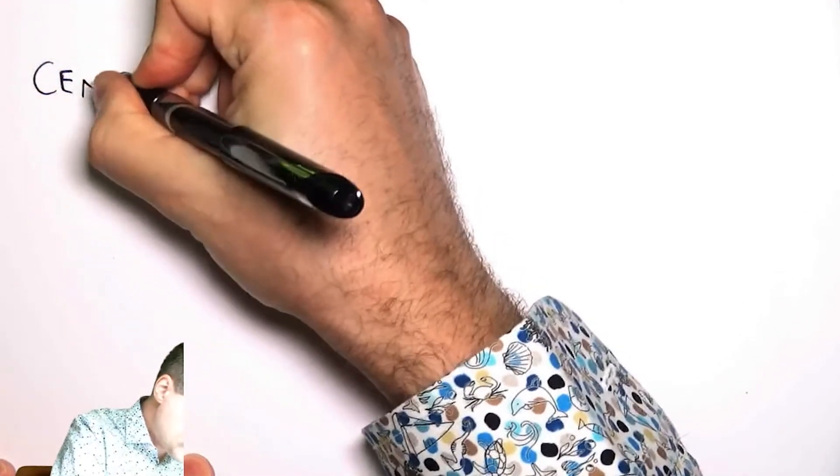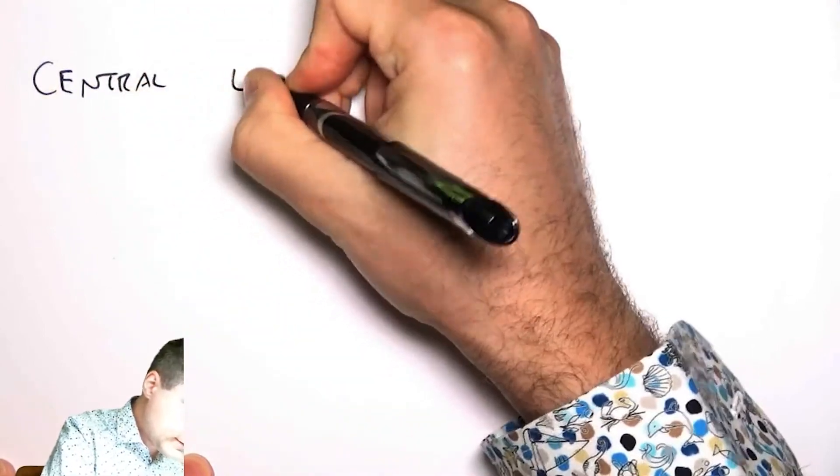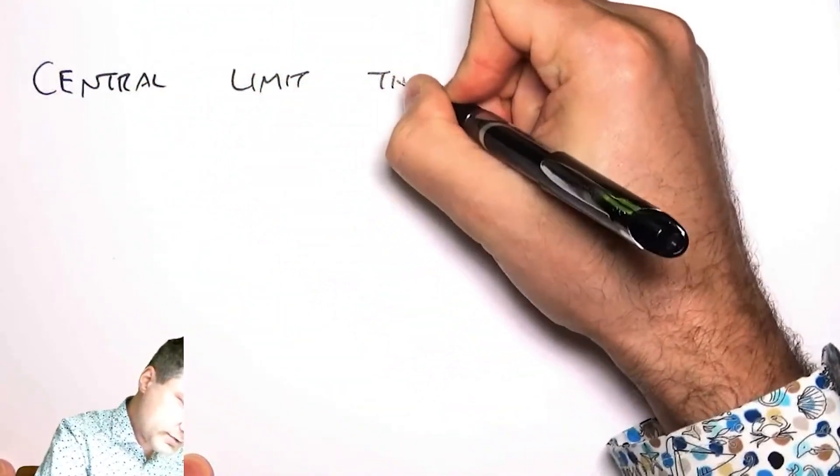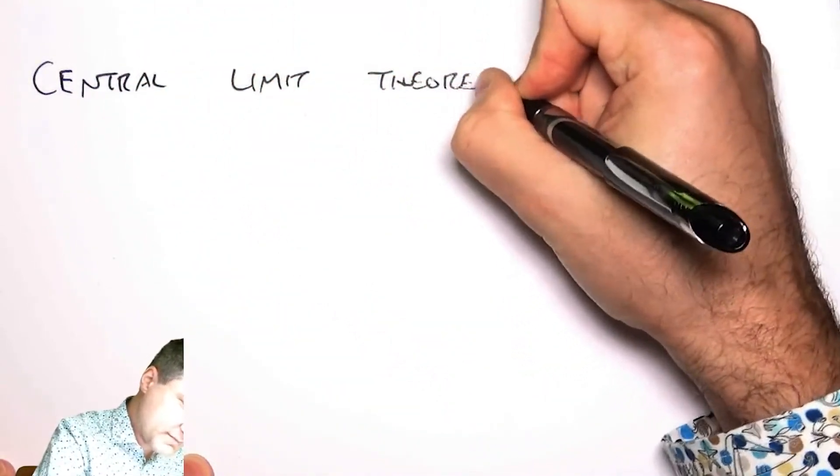Okay, so today I want to talk about one of the key theorems of probability, and this is called the Central Limit Theorem, and it kind of builds on all the stuff we've been talking about over the past few lessons.